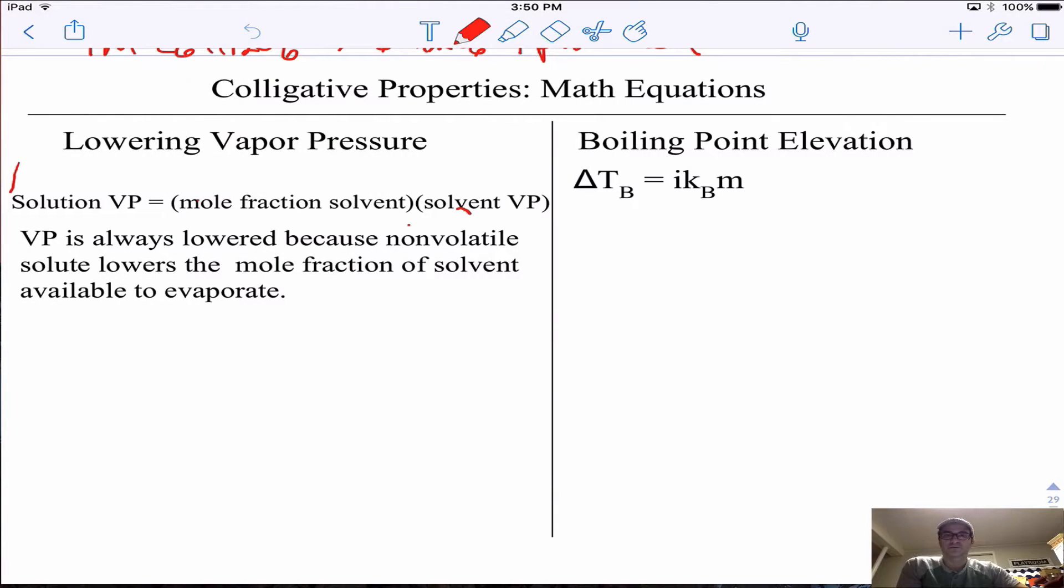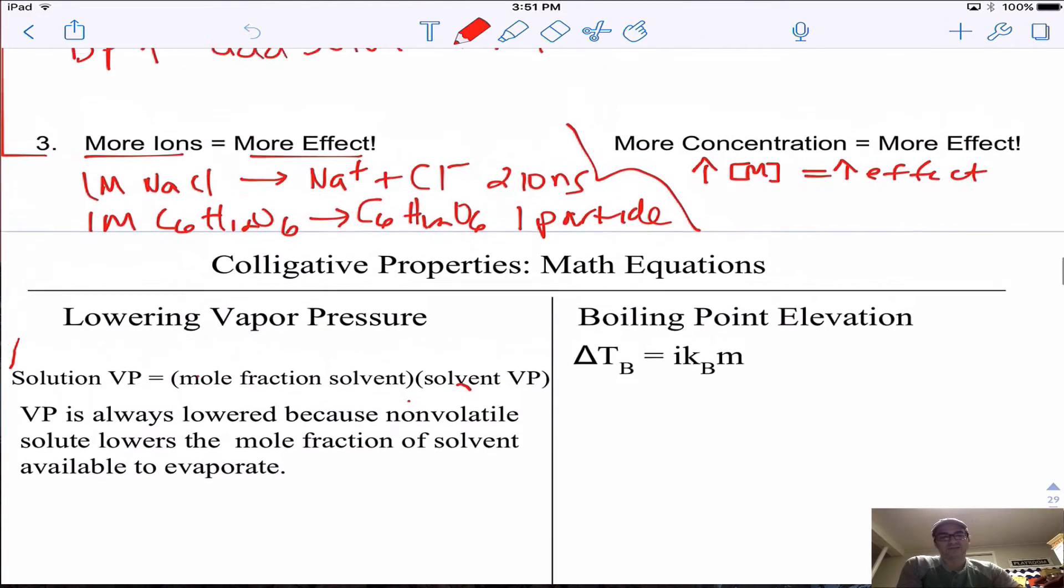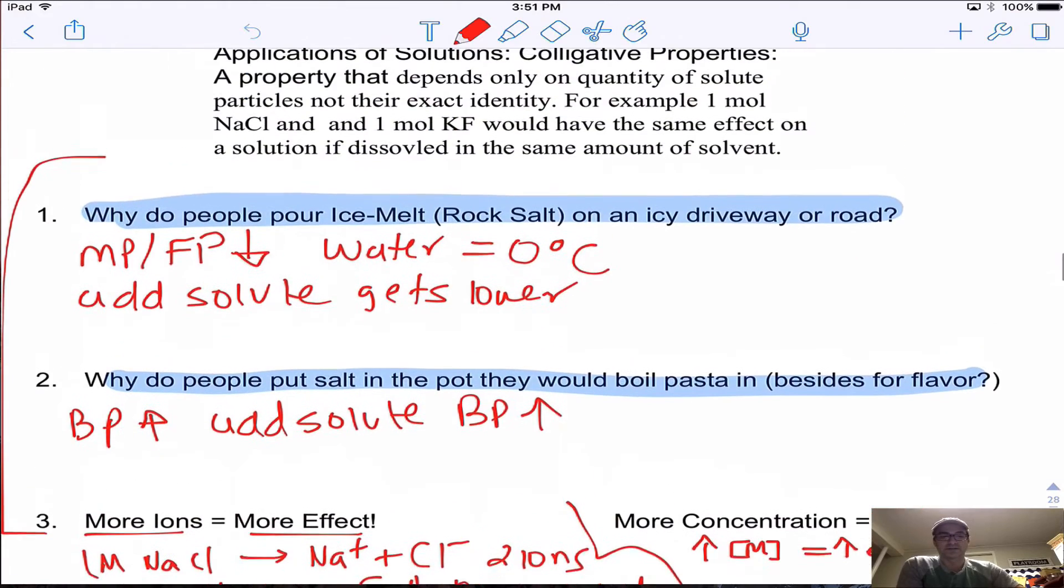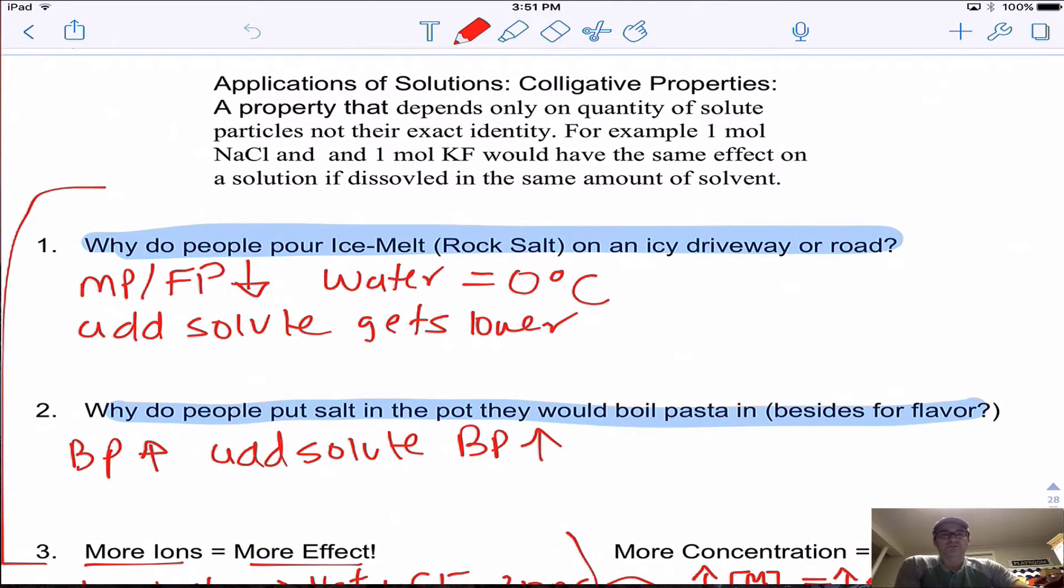Welcome everybody. Today I'm going to talk about the math equations that go along with colligative properties. Remember, a colligative property is a property in which the solution changes from what the solvent was, so a new property emerges such as a lower freezing point or higher boiling point.